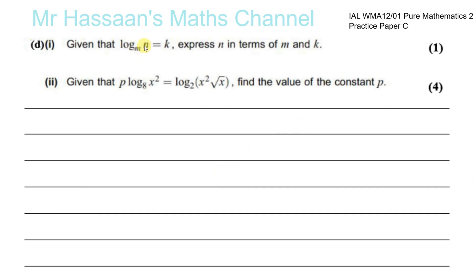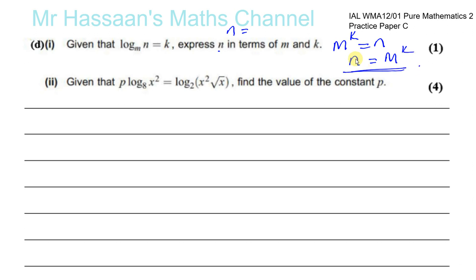Part d(i): given that log to the base m of n equals k, express n in terms of m and k. This is straightforward — m is the base, k is the power, and n is the result, so n equals m to the power of k.